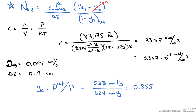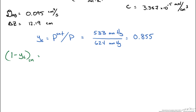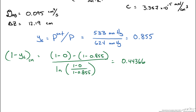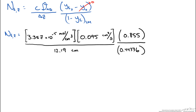The last term to calculate is the log mean of one minus y_e. We write this as one minus the mole fraction at the top of the film, which is zero, minus one minus the surface mole fraction, all over the natural log of that ratio. Plugging all values into the flux equation, we find the flux of ether in the z direction is equal to 5.045 times 10 to the minus 7 moles per square centimeter per second.